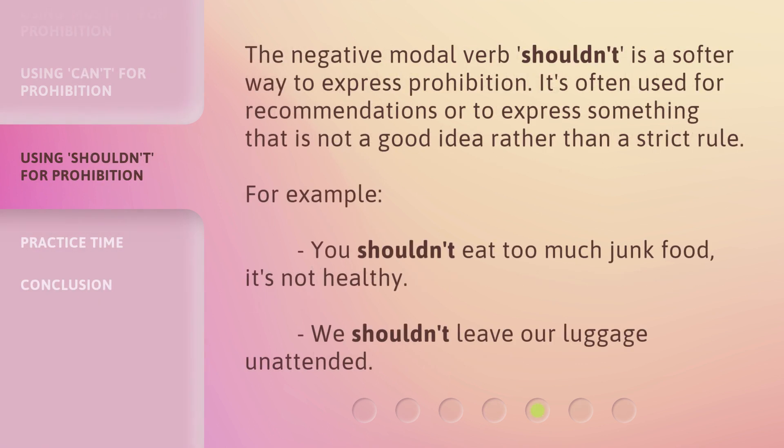The negative modal verb 'shouldn't' is a softer way to express prohibition. It's often used for recommendations or to express something that is not a good idea rather than a strict rule. For example: you shouldn't eat too much junk food — it's not healthy; we shouldn't leave our luggage unattended.